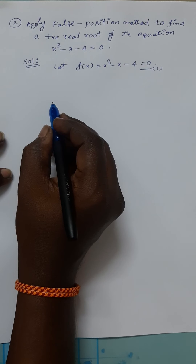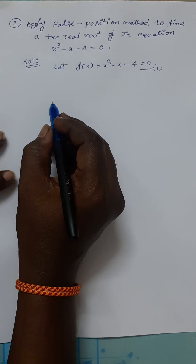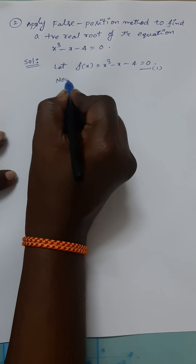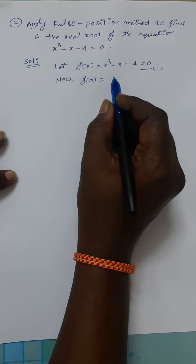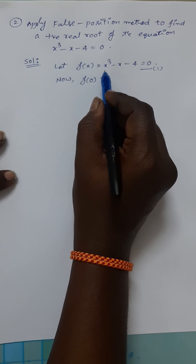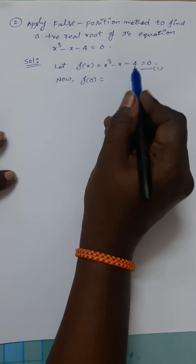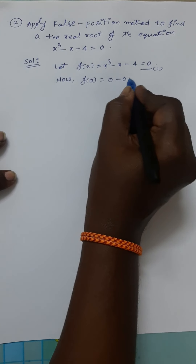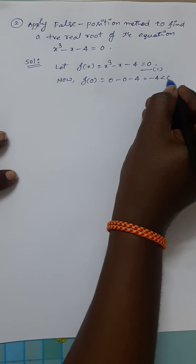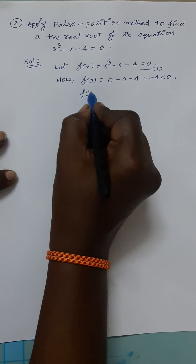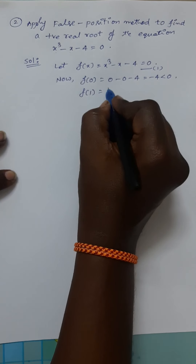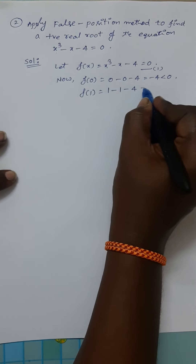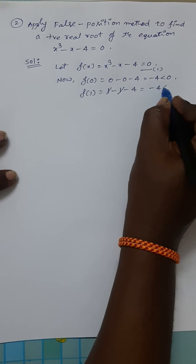First of all, we have to investigate the initial approximations for the required root. For that purpose, set the function values. What is f(0)? f(0) means substitute x = 0: 0³ - 0 - 4 = -4, which is negative. f(1): replace x with 1, you get 1 - 1 - 4; the +1 and -1 cancel, giving a negative value again.